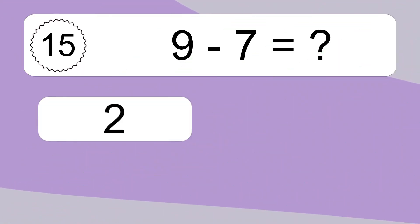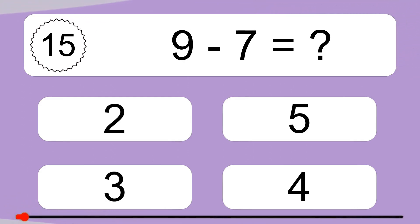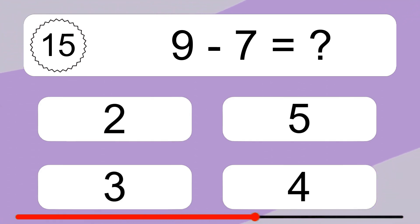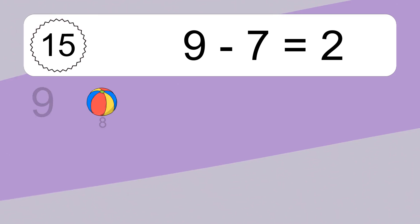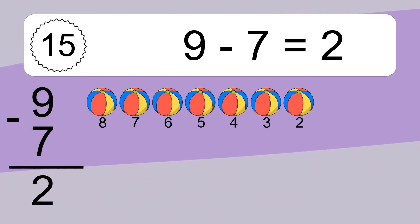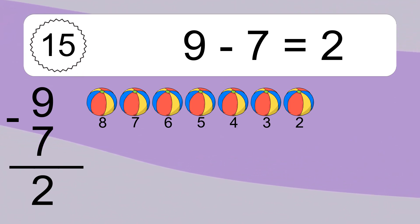9 minus 7 equals what? 9 minus 7 equals 2. Let's count it: 8, 7, 6, 5, 4, 3, 2.